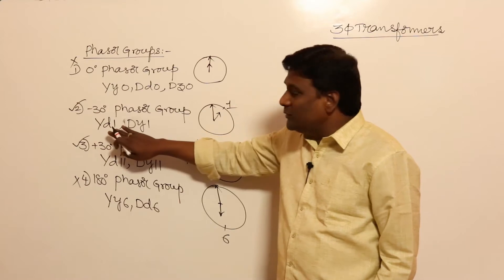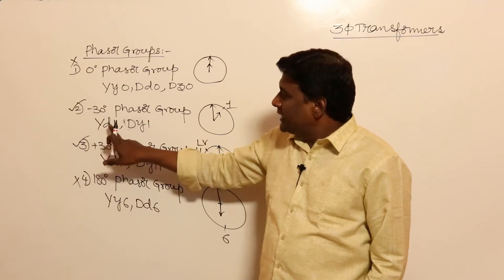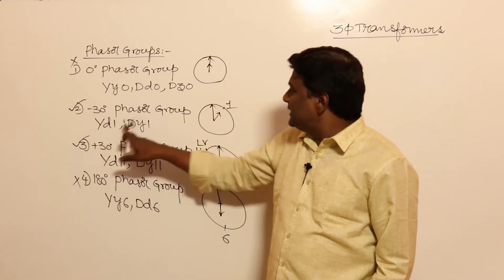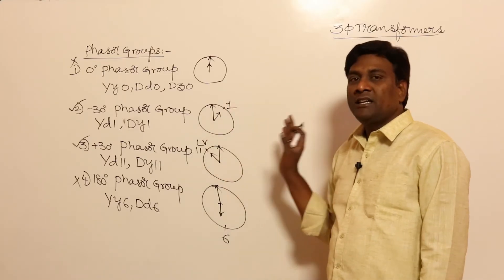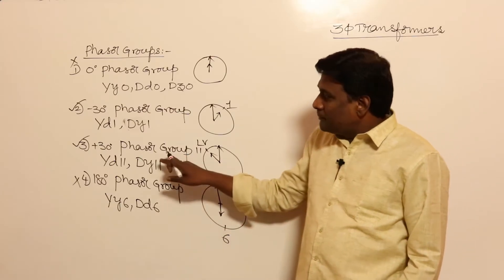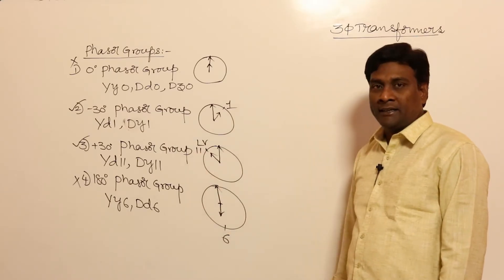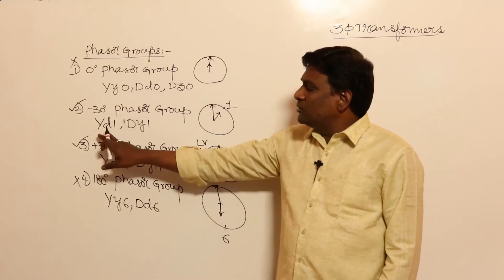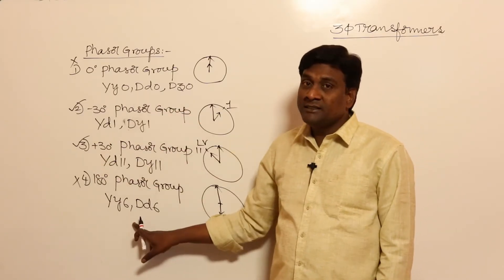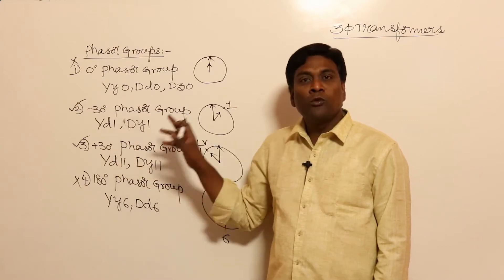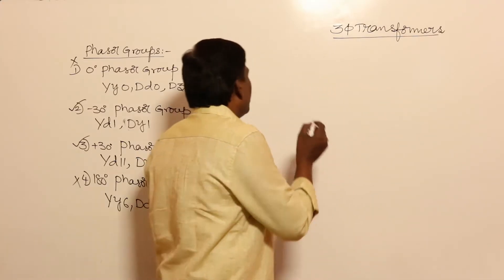For us, only two important phasor groups matter. YD1 means HV is connected in star, LV is connected in delta, and displacement is 1 — meaning LV line EMF lags behind HV line EMF by 30 degrees. Plus 30 degrees means LV line EMF leads HV line EMF by 30 degrees. In the exam, for YD connection, YD0 and YD6 are not possible — only YD1 and YD11 are possible, so two options can be directly eliminated.